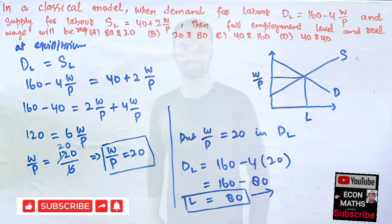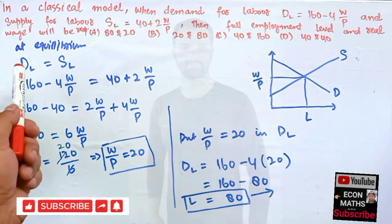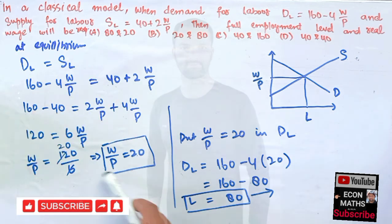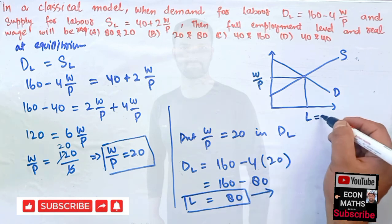This was an easy question. We just had to equate demand and supply, and after that find the equilibrium wage rate and the equilibrium level of labor. So we have L = 80.